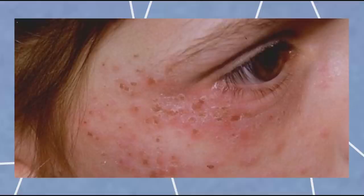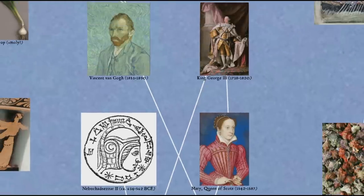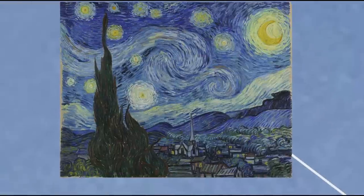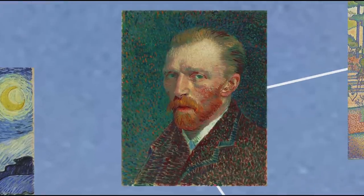There are a number of famous historical figures who seem to have suffered from porphyria, such as Nebuchadnezzar, King of Babylon; Mary Queen of Scots; King George III of Great Britain; and Vincent van Gogh. Van Gogh, who had intermittent psychotic episodes and hallucinations, is the romantic ideal of the tortured artist, known for his use of vibrant colours and swirling brush strokes, and also experimented with pointillism in some of his paintings.